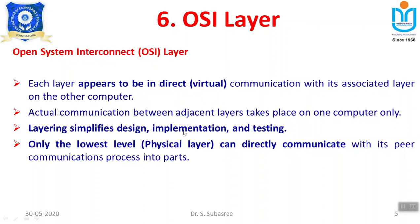All other layers perform independent activity. The sender-side layers perform independent activity, and the receiver-side layers perform independent activity. That is why communication between layers is virtual — it is an illusion that there is direct communication between sender and receiver. Actual communication between adjacent layers takes place on one computer only. Only the physical layer has direct communication. The purpose of this layered arrangement is to simplify design, implementation, and testing — if any problem occurs, you can easily identify and test it.